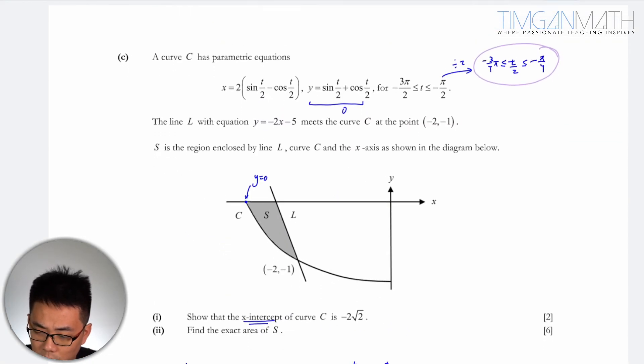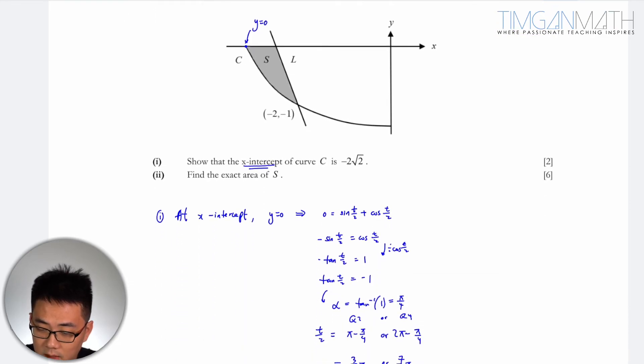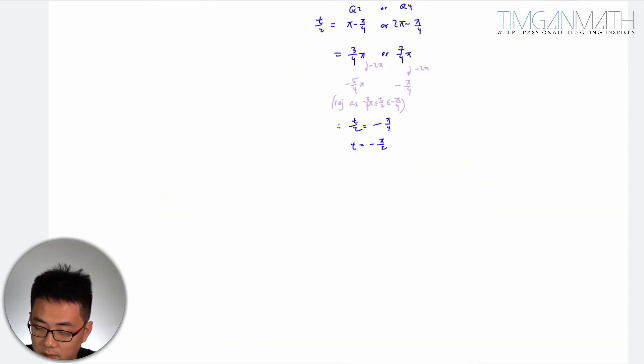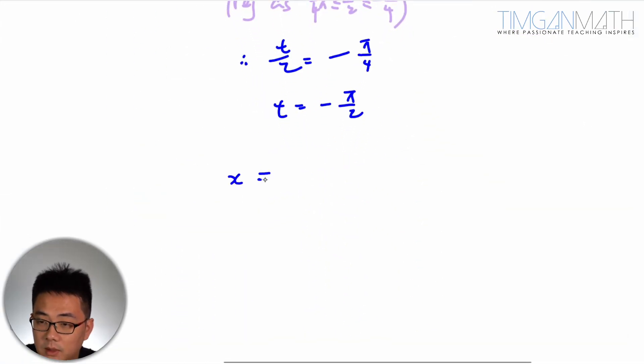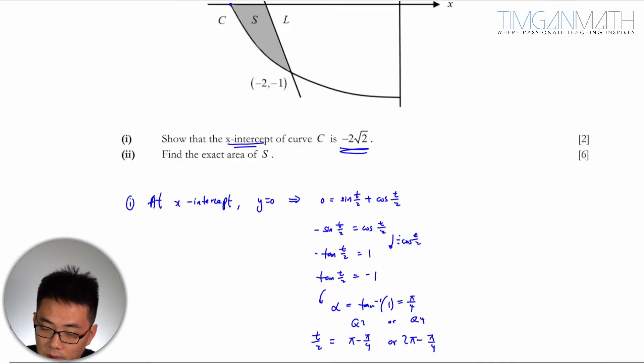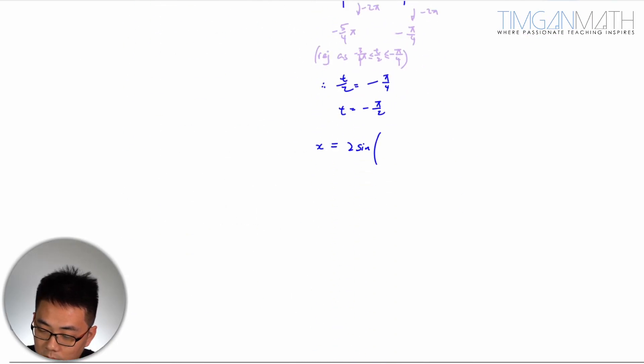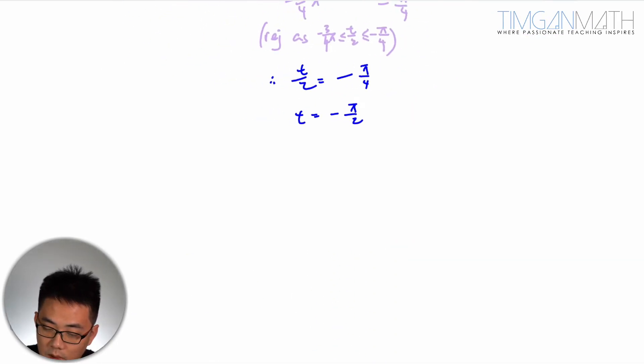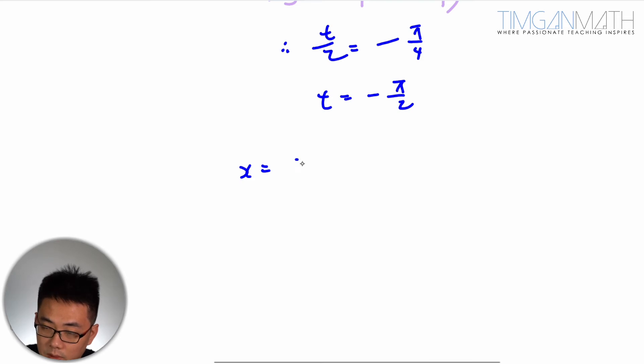Okay, so once done we need this x value here. So x equals 2 sine... so we're gonna just substitute this t value, so 2 sine... x equals 2 sine(t/2) will be -π/4 minus cosine(-π/4).